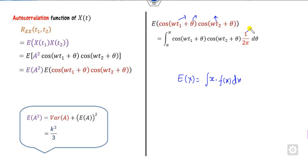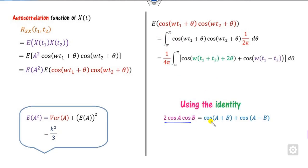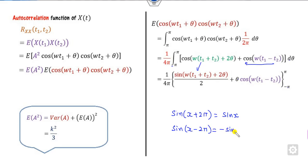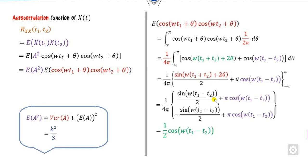Since t1 and t2 are fixed parameters, the integral varies with respect to θ. Multiplying and dividing by 2 and applying the identity 2cos(A)cos(B) = cos(A−B) + cos(A+B), you integrate with respect to θ. The integral of cos(wt1−wt2) over −π to π evaluates via the sine function. Taking limits from −π to +π, the terms cancel, leaving 2π in the denominator. This gives the autocorrelation R_x(t1, t2) = (k²/3)·cos(w(t1−t2)).